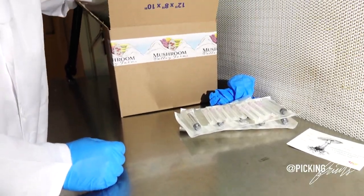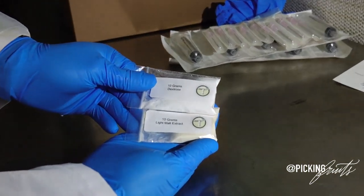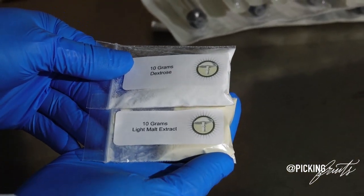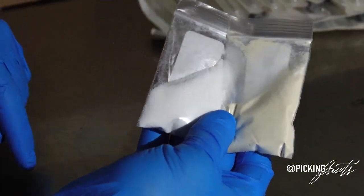The next thing in your kit will be nutrients. You will find 10 grams of dextrose, 10 grams of light malt extract, and this amount of nutrient here will be enough for 2,000 milliliters of liquid culture.